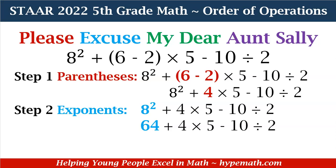Let's look at another example — and what a doozy it is! We have 8² + (6 − 2) × 5 − 10 ÷ 2. But we can do it, 5th graders. Step 1: complete the operation within the parentheses. 6 minus 2 equals 4. So now our expression is 8² + 4 × 5 − 10 ÷ 2. Step 2: address our exponents. 8 squared is 8 times 8, which is 64. So now our expression is 64 + 4 × 5 − 10 ÷ 2.